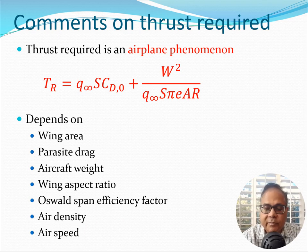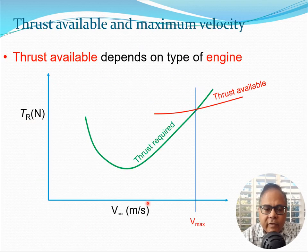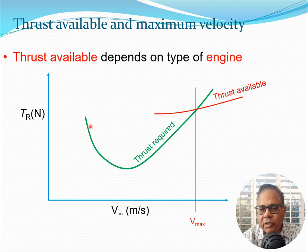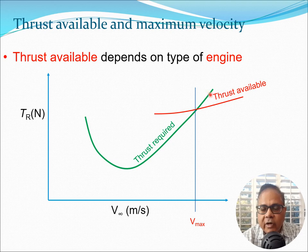One important limitation is the thrust available. If we plot thrust required versus velocity, the thrust available curve limits performance. Beyond the point of V_max, the required thrust exceeds the available thrust, so you cannot fly in that region. The maximum velocity you can fly is given by V_max, which is where thrust available equals thrust required — you need thrust available to be greater than or equal to thrust required.